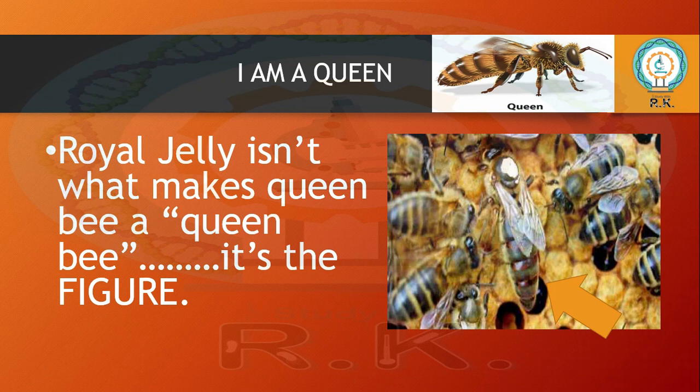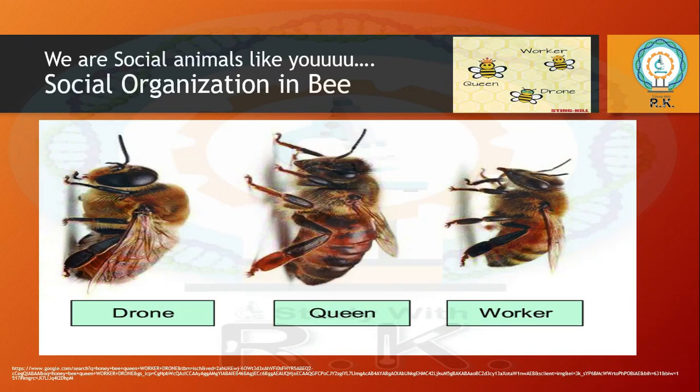There are three different castes of honey bees. The queen bee is the only fertile female in the colony — only she is able to lay eggs. She is the largest in size, but there are no wax glands present in the queen bee. The queen lives for three to four years and lays eggs at a rate of approximately 1,500 to 2,000 eggs per day.